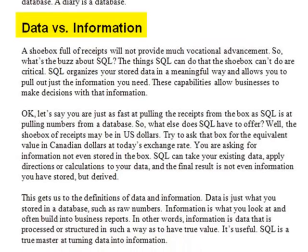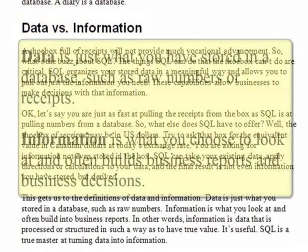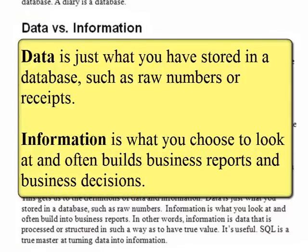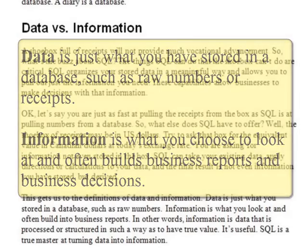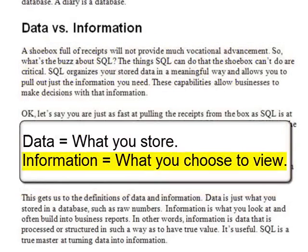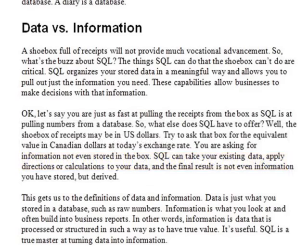This gets us to the difference in the definition of data and information. Data is just what you've stored, such as raw numbers or receipts. Information is what you choose to look at and often builds business reports and business decisions. In other words, information is data that is processed or structured in such a way as to have true value. Information is the data that is useful to you. SQL is a true master at turning stored data into valuable information.